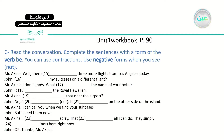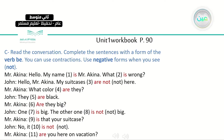Let's see the answers together. Mr. Akina: 'Hello. My name is Mr. Akina. What is wrong?' John: 'Hello, Mr. Akina. My suitcases are not here.' Mr. Akina: 'What color are they?' John: 'They are black.' Mr. Akina: 'Are they big?' John: 'One is big. The other one is not big.' Mr. Akina: 'Is that your suitcase?' John: 'No, it is not.' Mr. Akina: 'Are you here on vacation?'